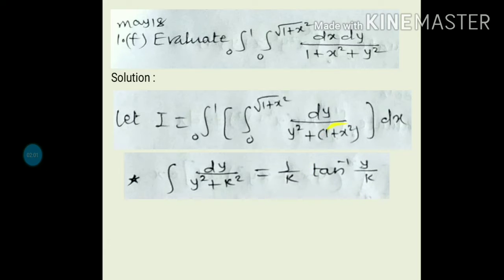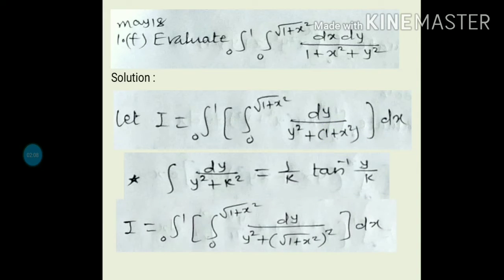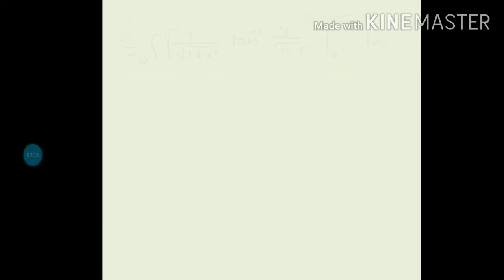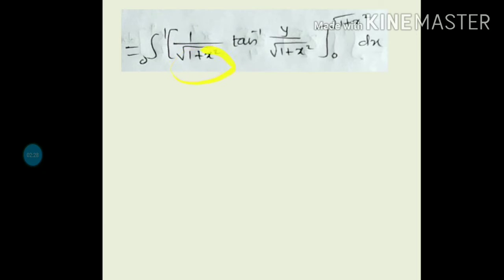We need to express the constant in the form k². To bring it into that form, we take square and square root simultaneously, so √(1 + x²) becomes k. Using the formula, the answer is (1/k) tan⁻¹(y/k), where k = √(1 + x²).